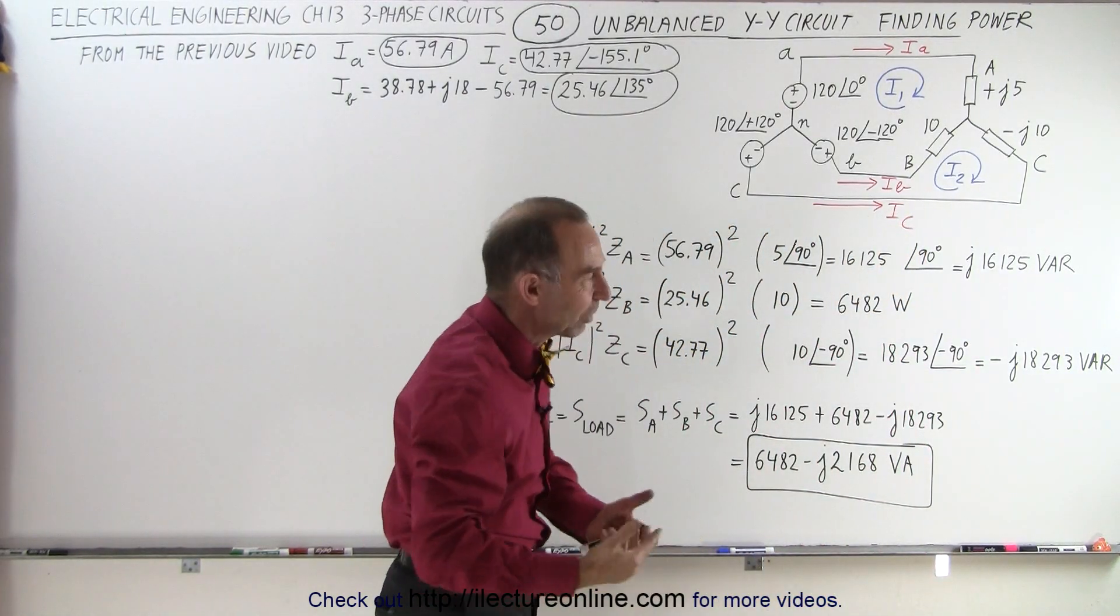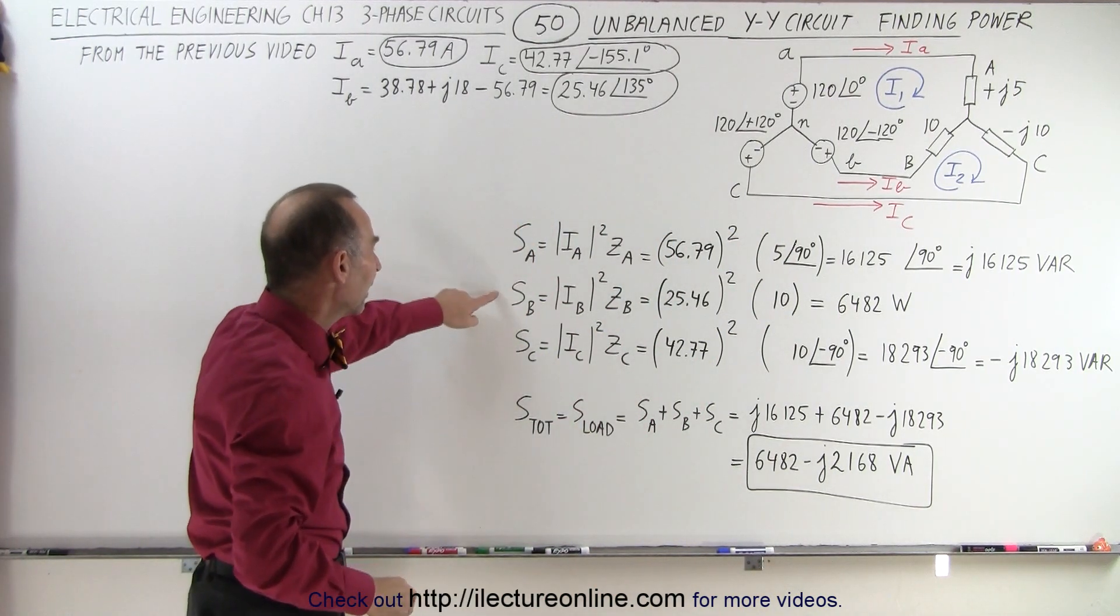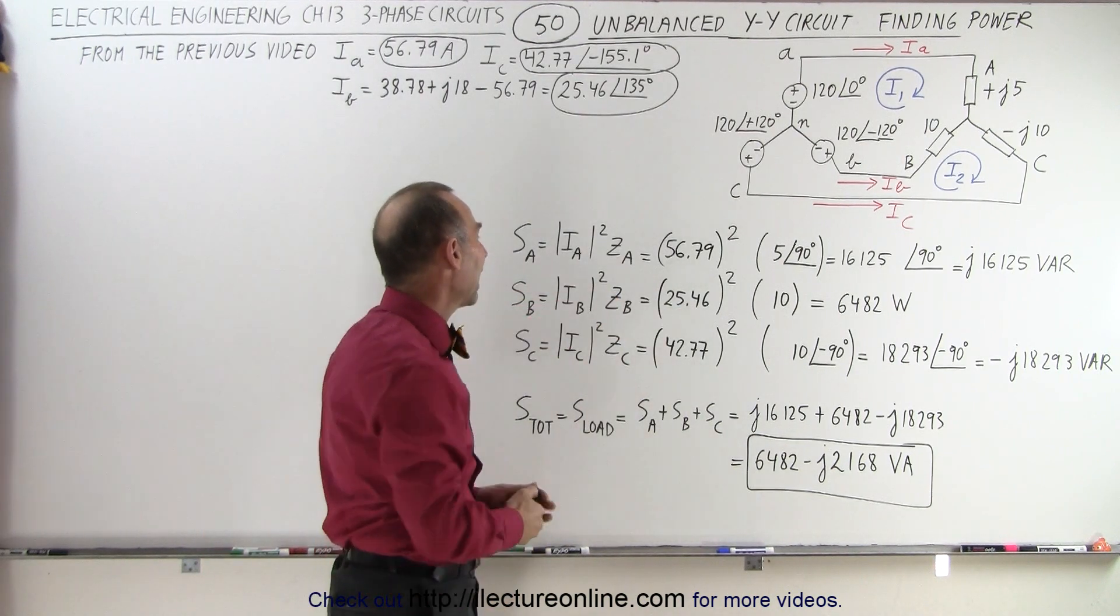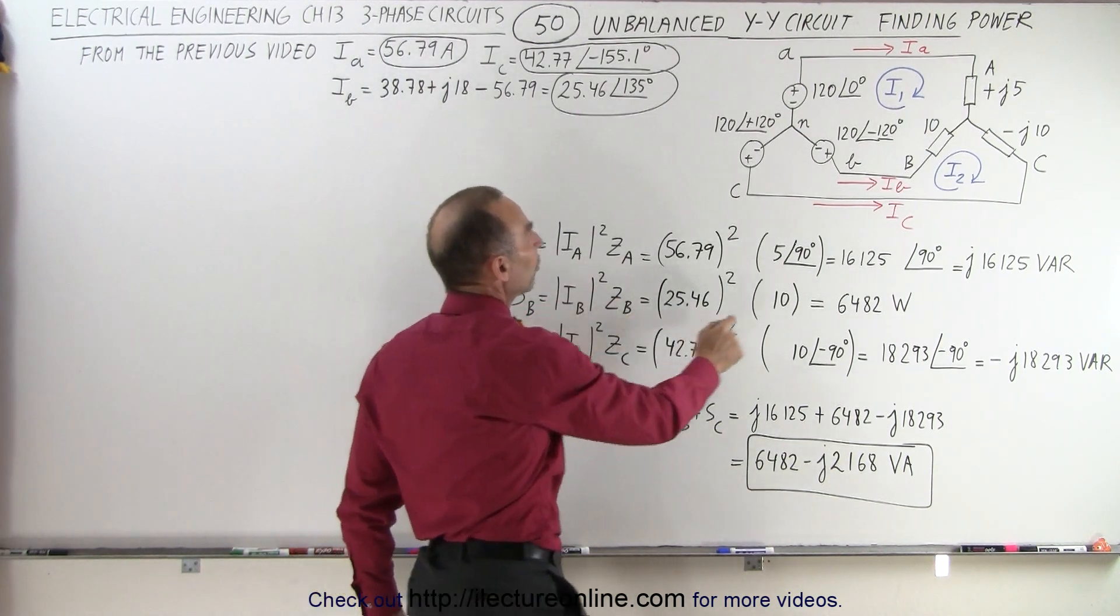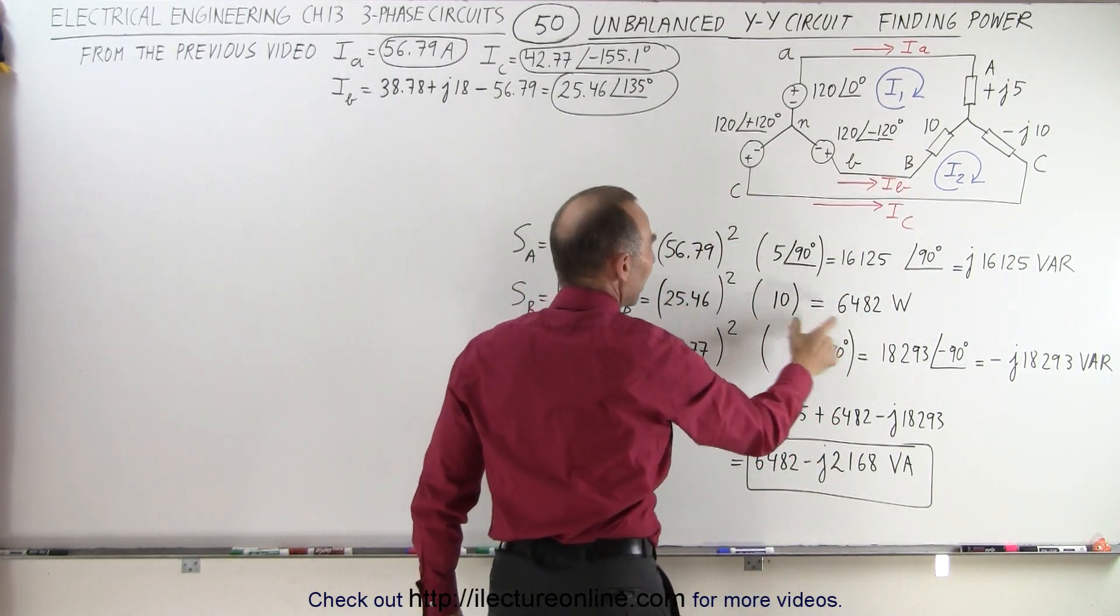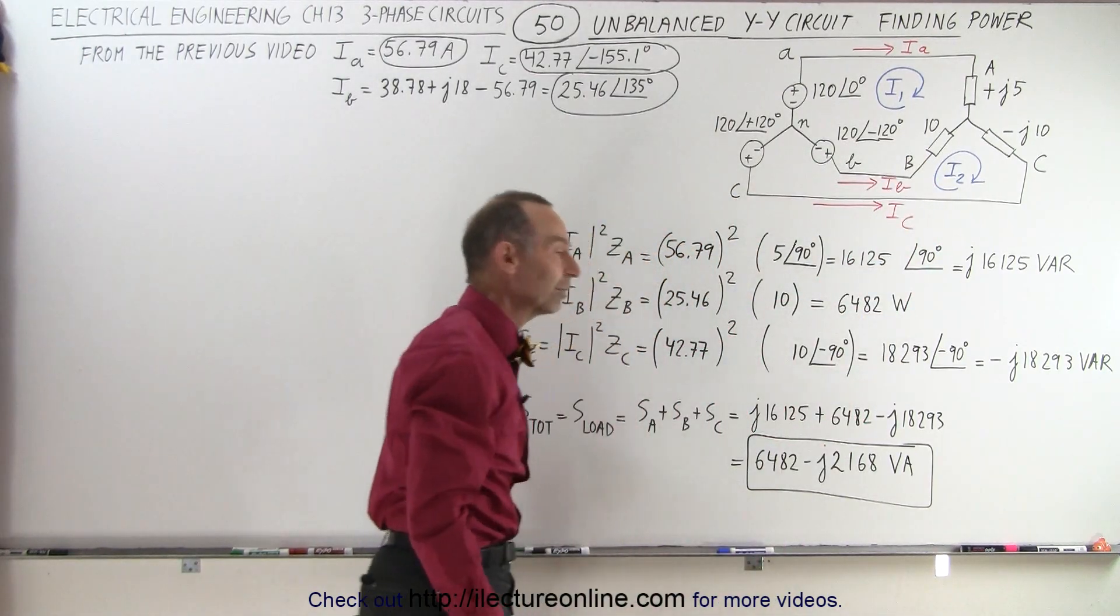Of course, we could say VA (volt-ampere), but it's actually only an inductive load. On S_B, we have the current squared, 25.46, multiplied times the impedance. This impedance is purely resistive, so we have no phase angle. The power consumed by this portion of the load is 6,482 watts.